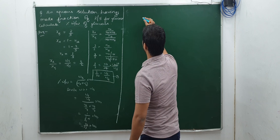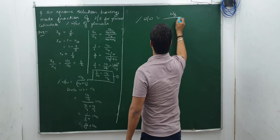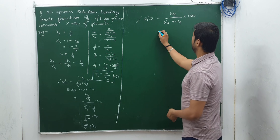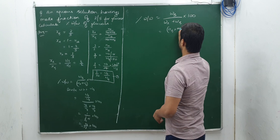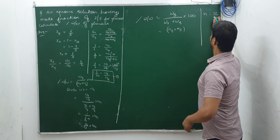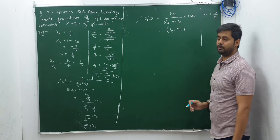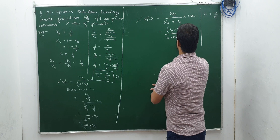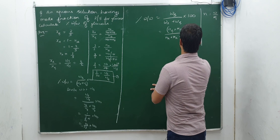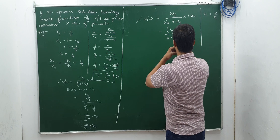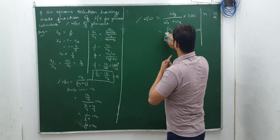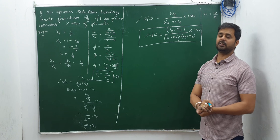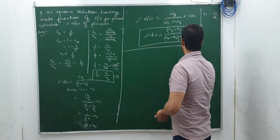Suppose you have to calculate percentage w/w = W_B / (W_A + W_B) × 100, and you have been given number of moles. What will you do? That equals (N_B × M_B) / (N_A × M_A + N_B × M_B) × 100, because given mass = number of moles × molar mass. So if you have been given number of moles, you can convert to given mass by multiplying moles by molar mass — this will save your time.